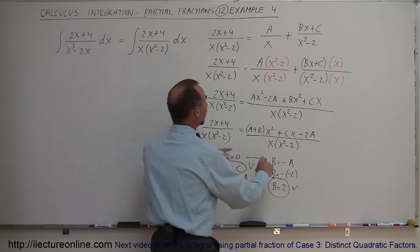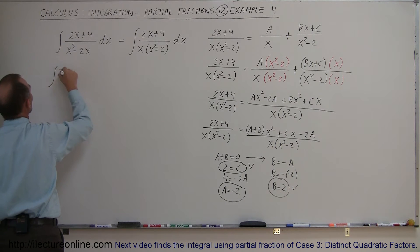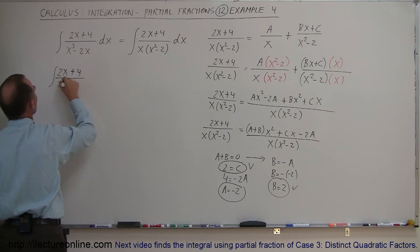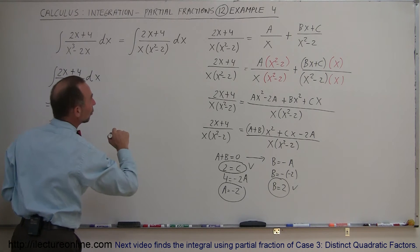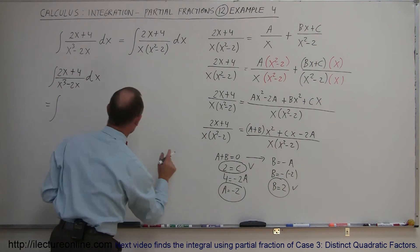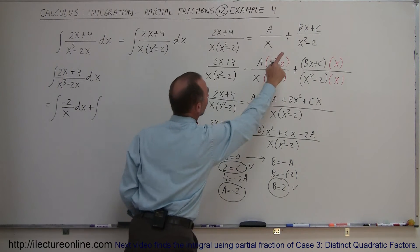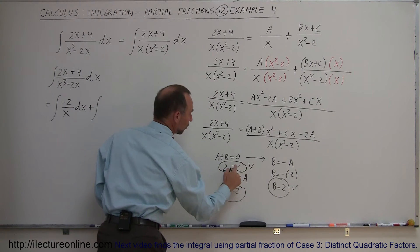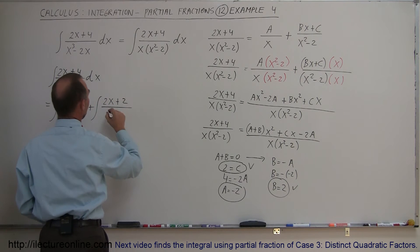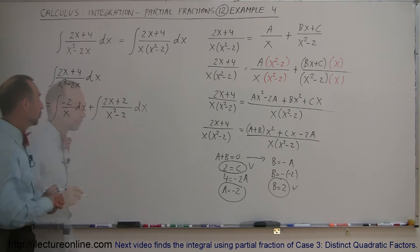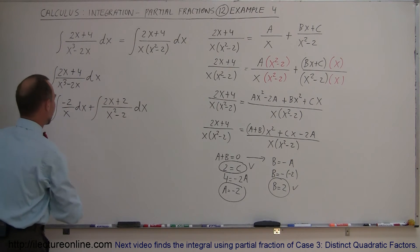Plugging those values back in, the integral of 2x plus 4 divided by x cubed minus 2x dx can now be written as the integral of negative 2 over x dx, plus the integral of 2x plus 2 over x squared minus 2 dx. The first integral on the left is easier to integrate; the one on the right will require a bit more work.